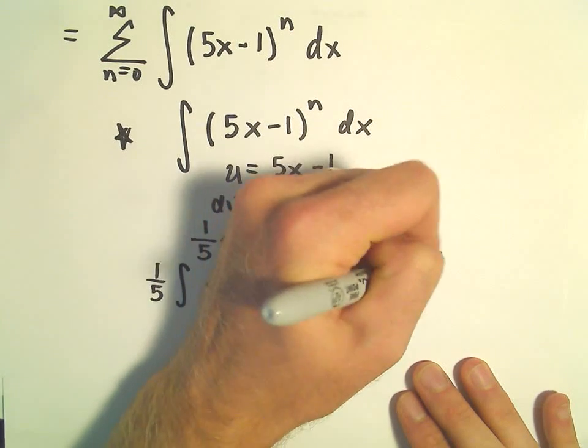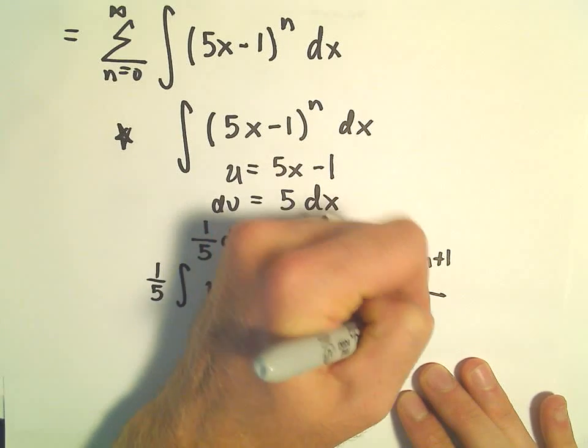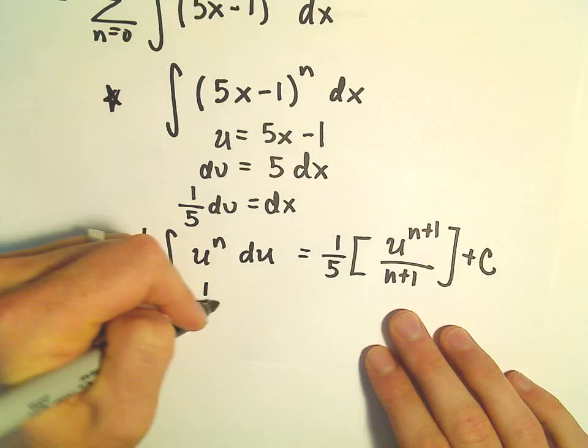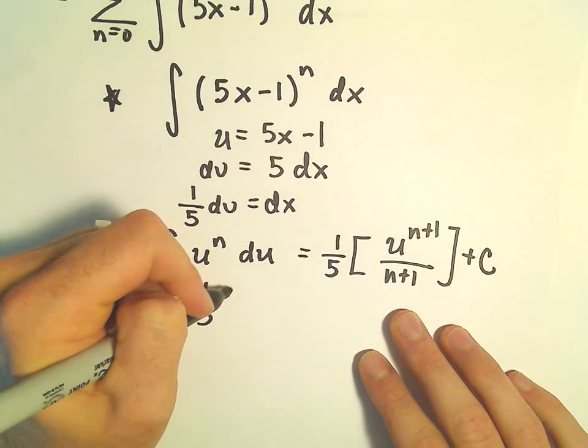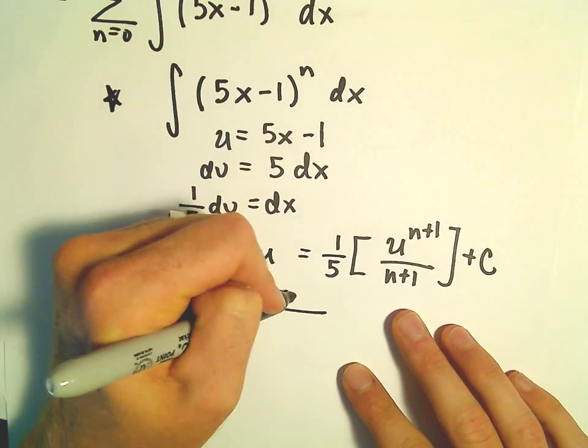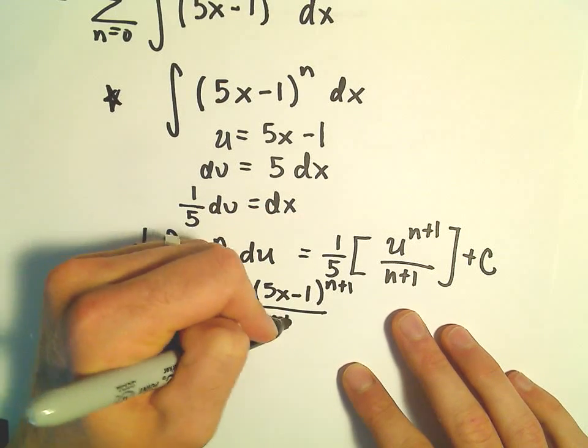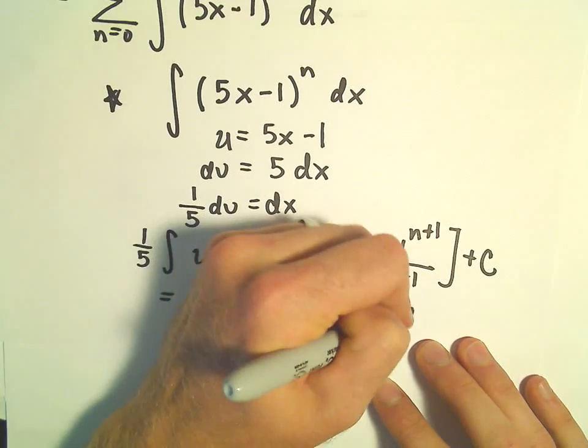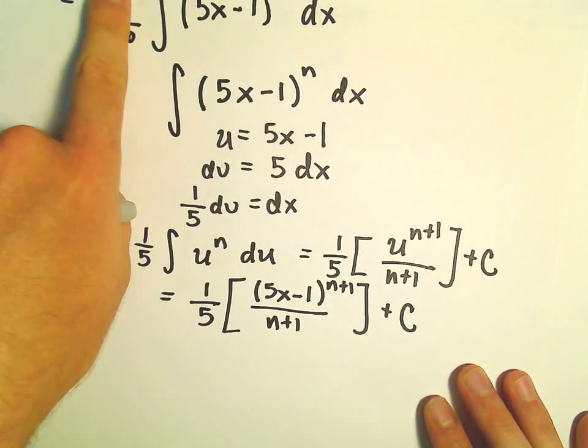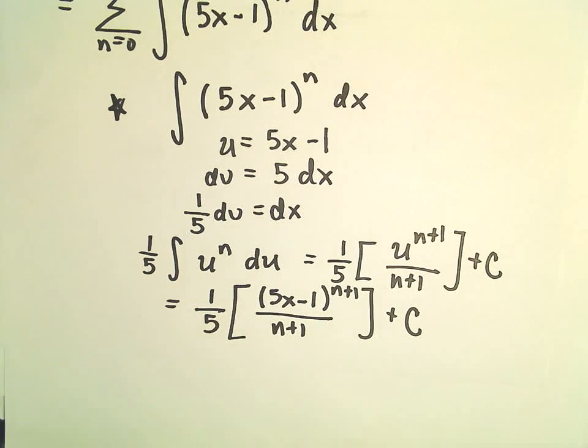Well, u to the n plus 1 over n plus 1 plus c. But we can simply write that as 1 fifth. And then our u is going to be 5x minus 1 raised to the n plus 1 over n plus 1 plus c. So now we're basically done. The only thing I did was just kind of left off the summation sign for a moment.